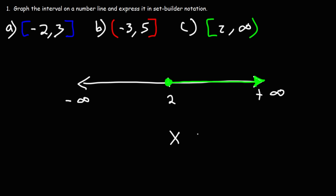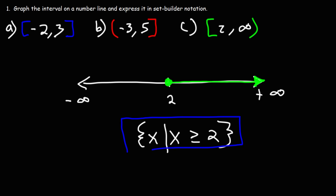So we can simply write that x is equal to or greater than 2 — it's to the right of 2. That's all we need to write to express this interval in set builder notation. That's how we can graph it on a number line, and that's how we can put it in set builder notation.